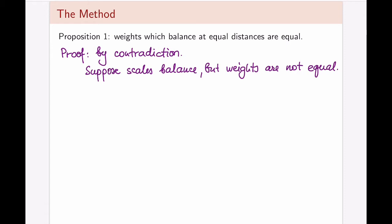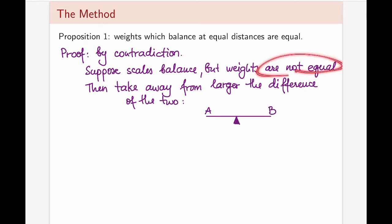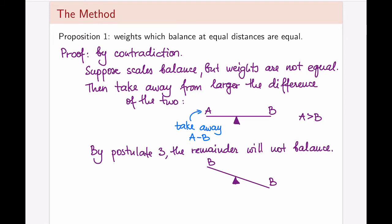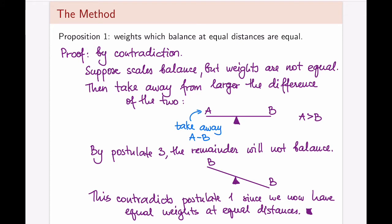What we're going to do next then is take away from the larger the difference of the two weights. So let's go back and actually draw ourselves a picture because this is a mechanical proof and it will really help to visualize what's happening. So I have the scales that balance, although weights, in fact, are not equal. And we're going to want to take away from the larger the difference of the two. It doesn't really matter which one is the larger. So let's suppose that A is larger. And from that, we're going to take the difference of the two. So from A, we're going to take away A minus B. Now, by postulate 3, if the weights did balance and then you took something away, they will no longer balance. But now if we took away A minus B from here, we have weight B here. And of course, we didn't do anything to this. So this remains B. This, of course, contradicts the very first postulate, saying that equal weights balance at equal distances. Contradiction. And we're done.